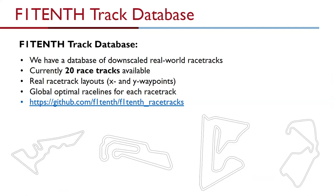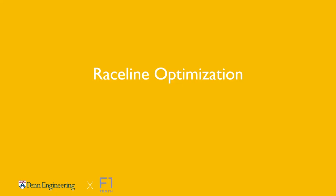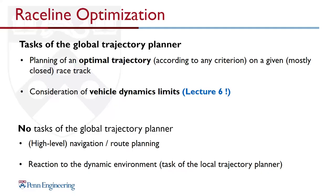We've provided material for you: on the F1/10 GitHub there's a repository with 20 racetracks from all over the world — Silverstone, Hockenheim, Austin Texas — all downscaled to 1:10, so you can race directly with your F1/10 car in simulation. This racetrack database includes both the center line and the race line already. Are there any questions on center line generation before we move on to actually creating the race line?